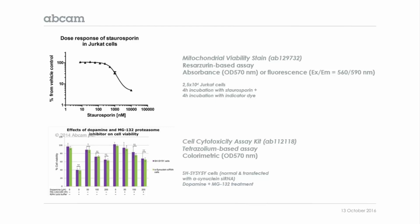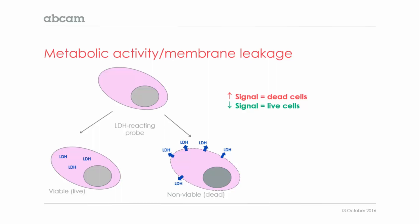A slight variation of the metabolic assay is the LDH cytotoxicity assay. This assay detects the presence of LDH — the lactate dehydrogenase enzyme — in the cell culture medium. LDH is retained in the cytoplasm in viable cells, but it leaks into the culture medium when the cells are dying and the membranes are disrupted. In this case, the probe is not able to enter the cells, so the signal is only produced when the LDH is released into the medium.